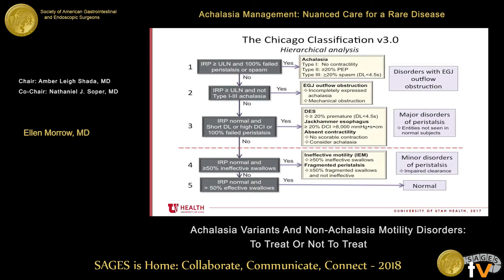This is a brief talk, but we need to spend a little bit of time defining what we're talking about. This is the Chicago Classification version 3.0, which is our current classification scheme for motility disorders. I think it's already been covered what the variants of achalasia are, but I'll talk about that a little bit. EGJ outflow obstruction is something I'll try to spend a little bit more time on. And then we have spastic disorders: distal esophageal spasm and jackhammer esophagus. I'm not going to cover aperistalsis today.